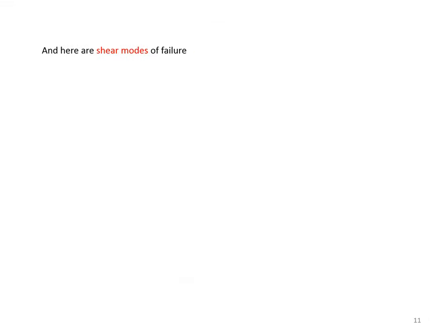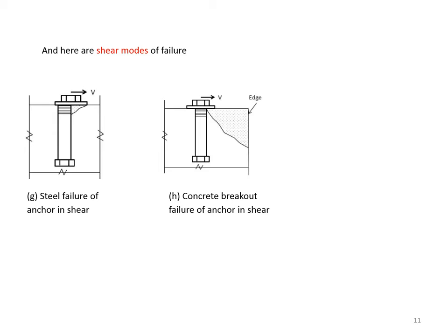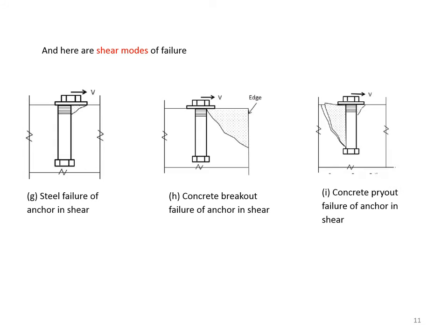The shear modes of failure are: G, steel failure of anchor in shear; H, concrete breakout failure of anchor in shear; and I, concrete pryout failure of anchor in shear.